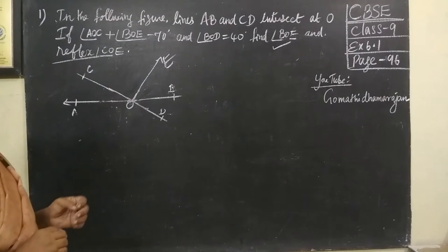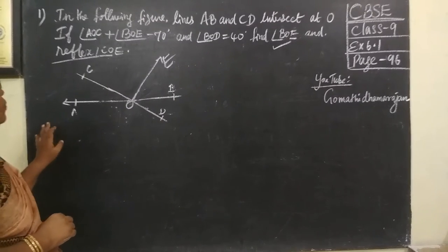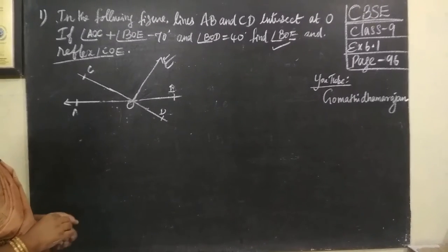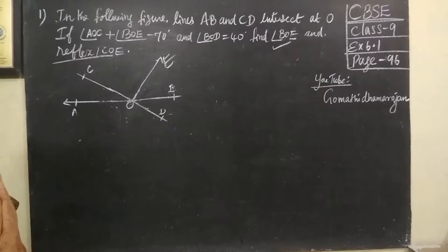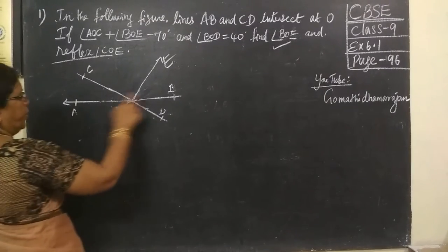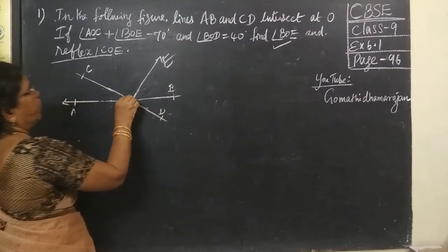First I start with exercise 6.1, question number 1. In the following figure, lines AB and CD intersect at O. You are given AB and CD, they intersect at point O.